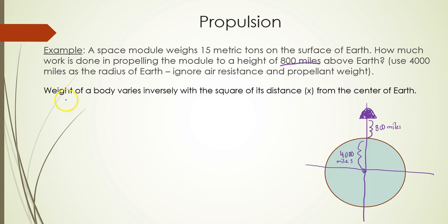So we know work equals force times distance. Well, we can find the force component of this by saying force is equal to k over x squared. That's how you write that weight, which is force, of a body varies inversely with the square of its distance x. F equals k over x squared.